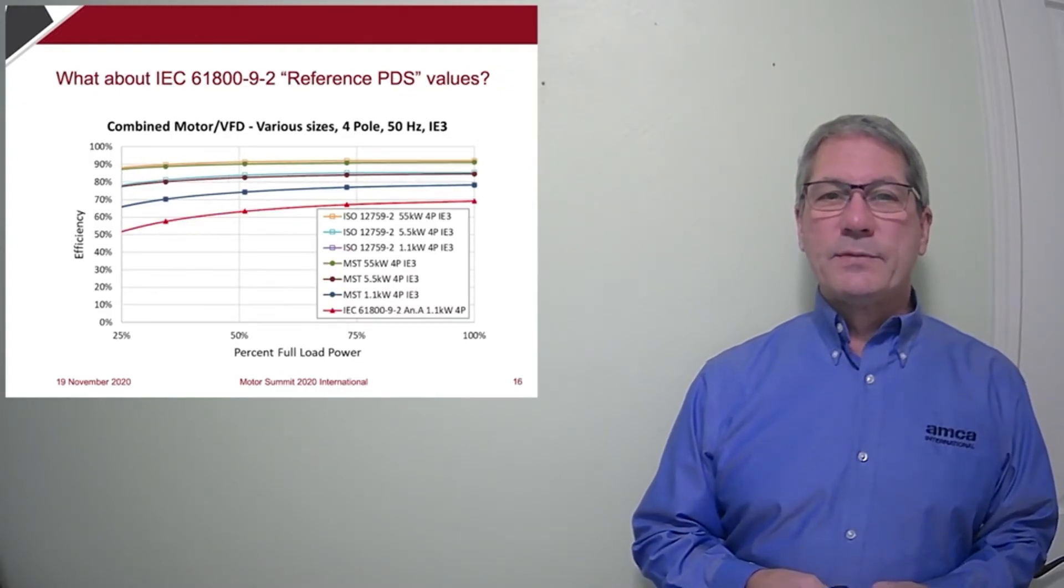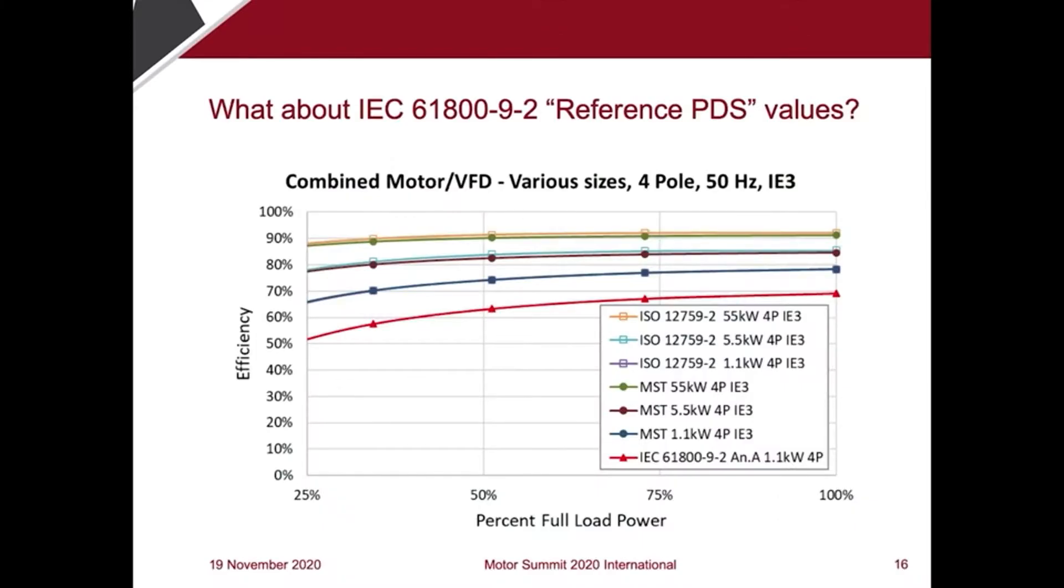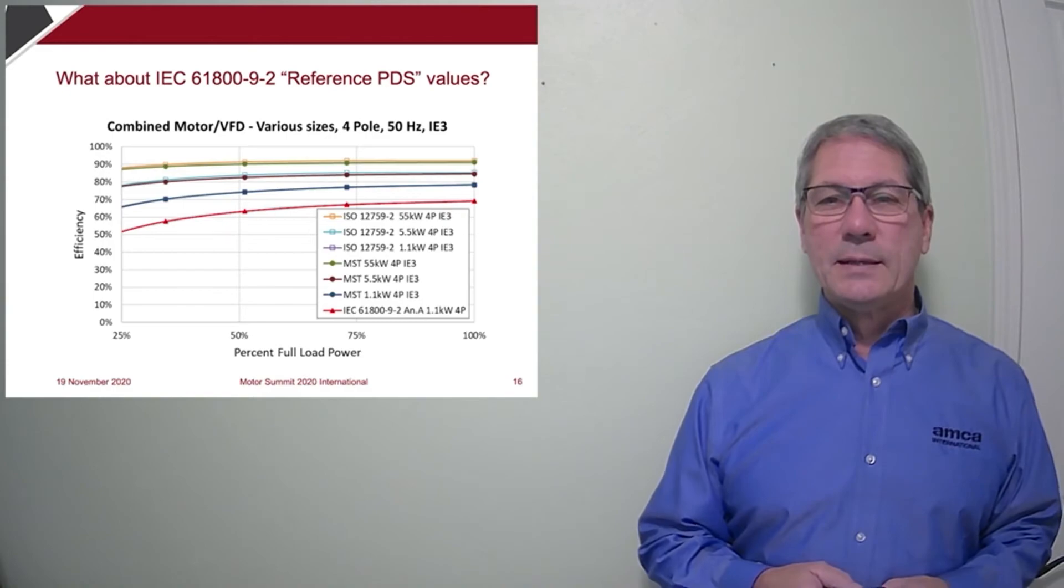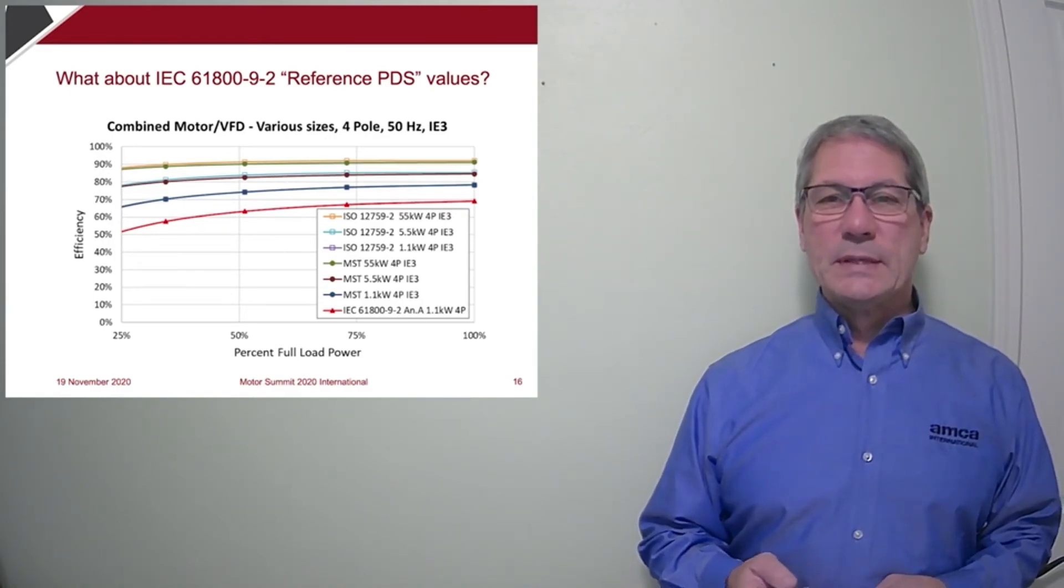We've been asked, why not use the reference PDS values from IEC 61800-9-2? And I have shown those values in here in this graph in red for the smallest size. And these are clearly not typical values and we need typical values to ensure technology neutrality. And that's just not their purpose in this standard.